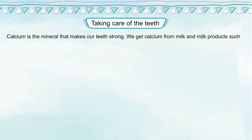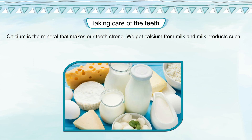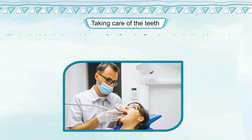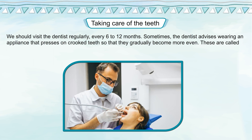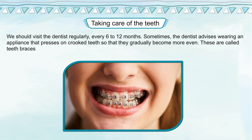Calcium is the mineral that makes our teeth strong. We get calcium from milk and milk products such as curd and cheese. Fruits and salads also keep the teeth healthy. We should visit the dentist regularly every 6 to 12 months. Sometimes the dentist advises wearing an appliance that presses on crooked teeth so that they gradually become more even — these are called teeth braces.